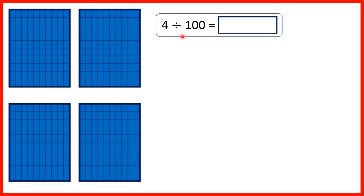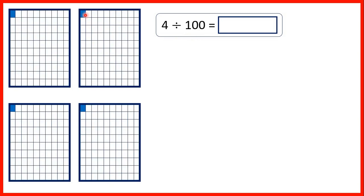Let's have a look at this visually — 4 divided by a hundred. We have four whole rectangles. Dividing by a hundred is the same as keeping one part out of a hundred, so we can show one part out of a hundred on each of our four rectangles. When we put these four parts together we have four parts out of a hundred, or four hundredths of one whole rectangle. That's why our answer is 0.04 — the second digit after the decimal point is the hundredths digit.